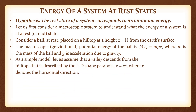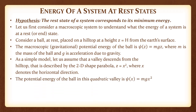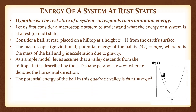As a simple model, let us assume there is a valley from the hilltop. The valley descends and is described by a two-dimensional parabolic shape where z equals x squared, and x is the horizontal direction. So if one were to look at the horizontal direction x, this is also a measure of the vertical direction z, because ψ(z) is simply mgz, and m and g are constants. So z equals x squared is your parabola, and the potential energy of the ball in this quadratic valley is simply ψ(x) = mgx².